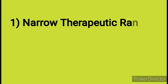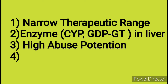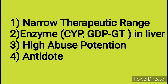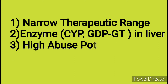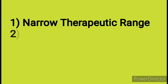Regarding pharmacokinetics: first, barbiturates have a narrow therapeutic range, meaning a low safety margin. Second, they induce enzymes like CYP enzymes which increase the metabolism of other drugs. Third, they have a high abuse potential. Fourth, there is no specific antidote for barbiturates, but we can use non-specific agents like picrotoxin, which blocks chloride entry, and respiratory stimulants and analeptics such as doxapram, which stimulate the respiratory center in the CNS.